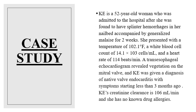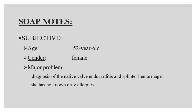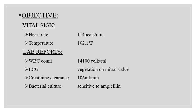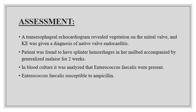SOAP notes — Subjective: the patient is a 52-year-old female with a major diagnosis of native valve endocarditis and splinter hemorrhage; she has no drug allergies. Objective vital signs: heart rate 114 beats per minute, temperature 102.1°F, WBC count 14,100 cells/mL. ECG reports show vegetation on the mitral valve. Creatinine clearance is 106 mL/min. Bacterial culture is sensitive to ampicillin.